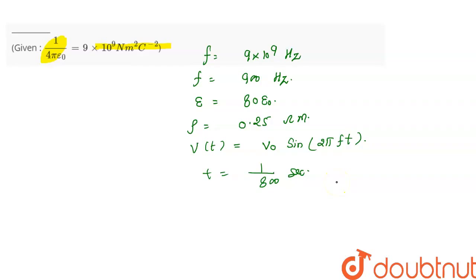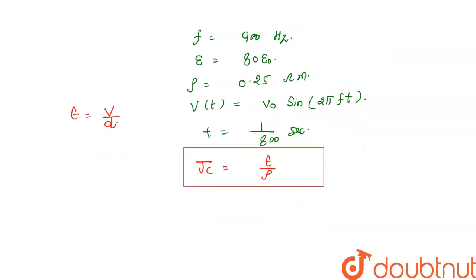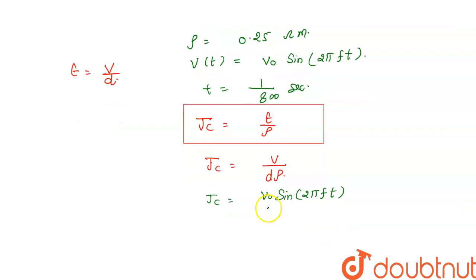When we connect the parallel plate capacitor with an alternating voltage source, an electric field is produced: E = V/D. The conduction current density Jc = E/ρ = V/Dρ. Substituting the voltage, Jc = V₀ sin(2πft) / (Dρ). This is equation number one.